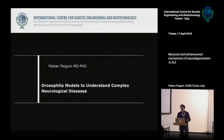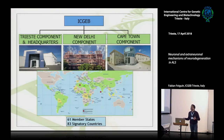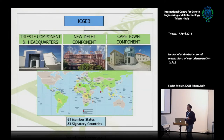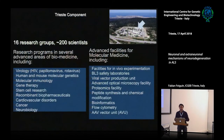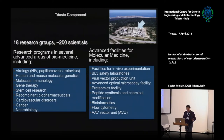Before getting into the topics directly, I want to briefly show the ICGB. This ICGB organization is made out of three components, and the ones that you see in green are the member countries that belong to this organization. Here in Trieste we have 16 research groups doing many different topics, and we have some capacity of experimentation here.